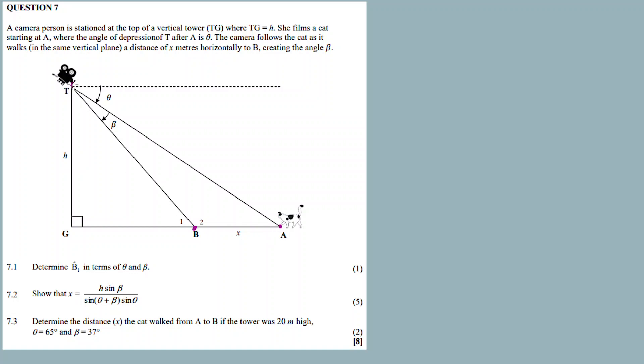The angle of depression from A is theta. The camera shows the cat at A as it walks in the same horizontal plane a distance of x meters horizontally to B. So we move from A all the way to B, and the camera shifts so that it captures every moment of the cat's journey.